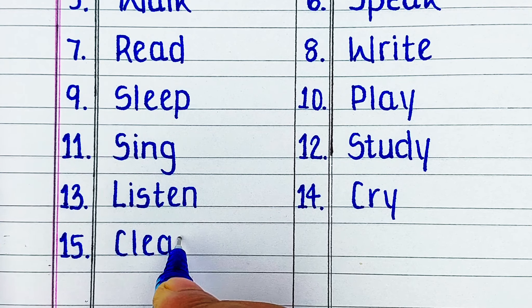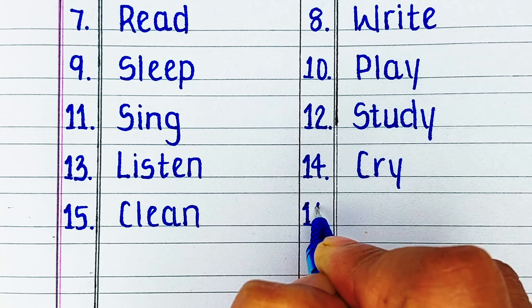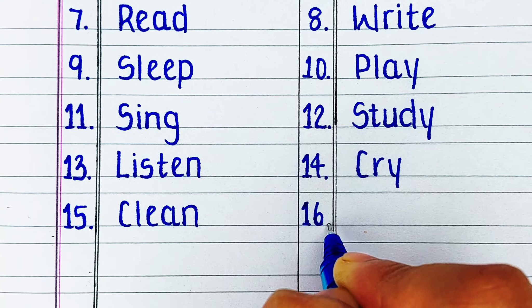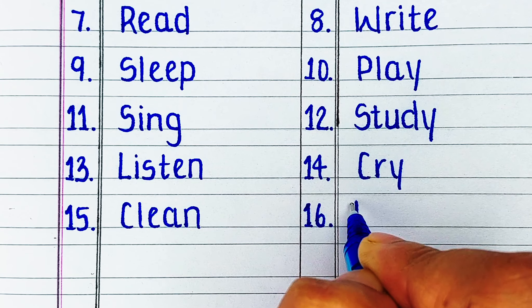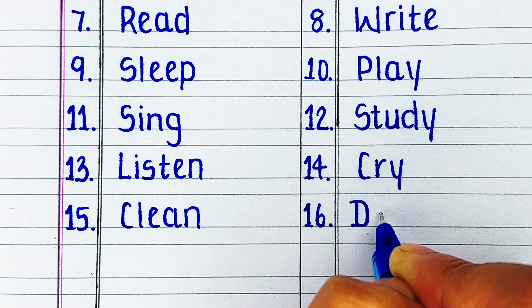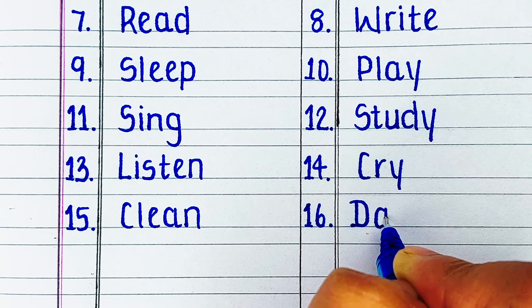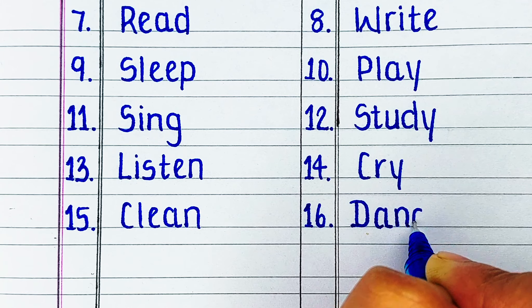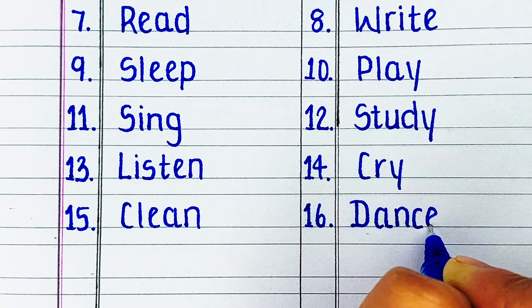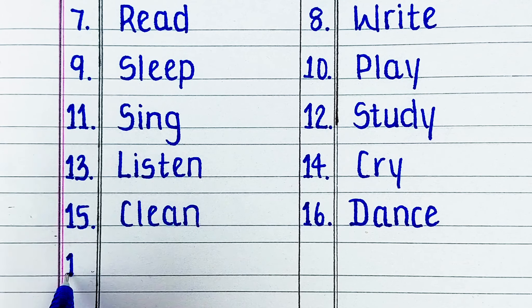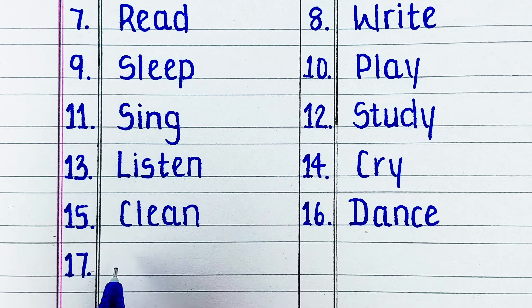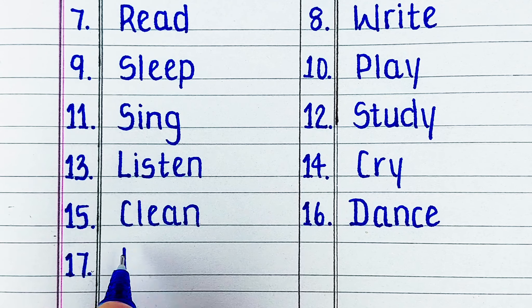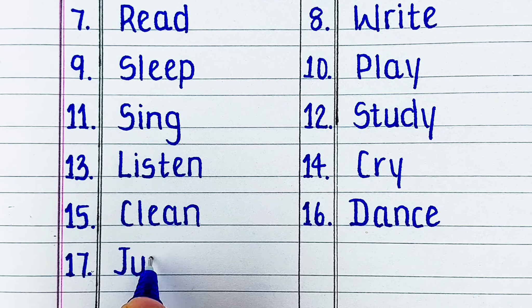Next word is C-R-Y, cry. Next action word is C-L-E-A-N, clean. Next word is D-A-N-C-E, dance. The next action word in our list is J-U-M-P, jump.